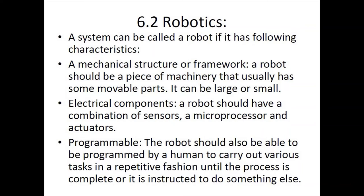These three characteristics are the necessities for a machine to be labeled as a robot. So if the examiner gives you a description of a system or a machine and all three of these are present, you can answer that the machine is a robot. Otherwise, answer that the given machine is not a robot.